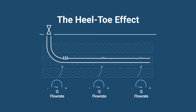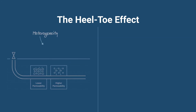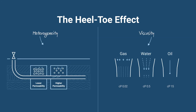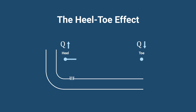This is why you will have a higher driving force or pressure drawdown, and therefore a higher flow rate at the heel section of a well, which gradually decreases towards the toe section. This also means that, regardless of reservoir heterogeneity or fluid viscosity, the inflow rate of a long horizontal well is naturally imbalanced to begin with.